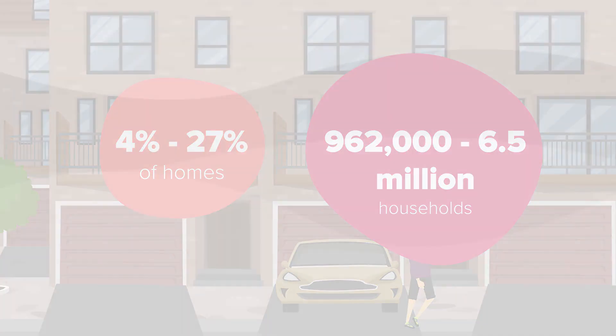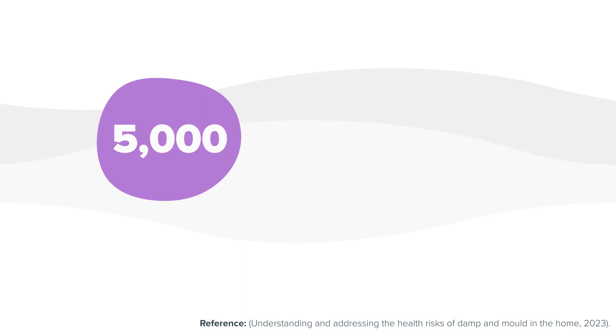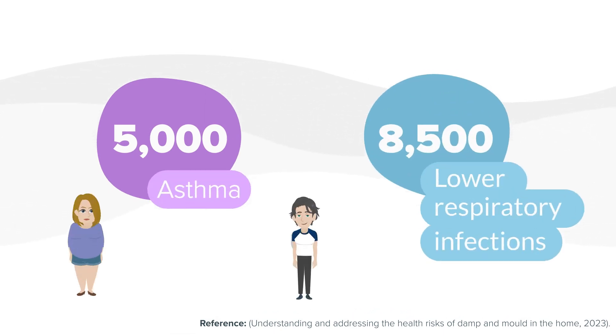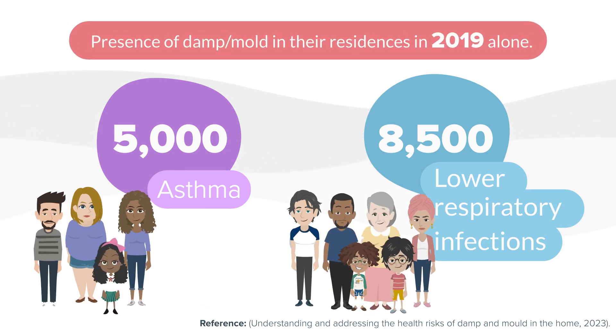Furthermore, they estimate that approximately 5,000 cases of asthma and 8,500 lower respiratory infections among children and adults had the presence of damp and/or mould in their residences in 2019 alone.